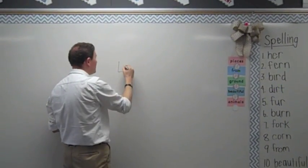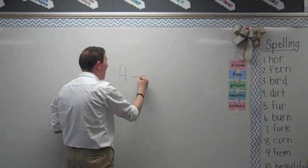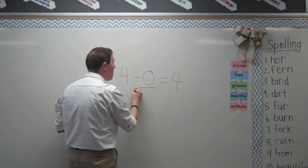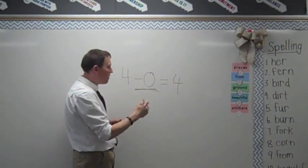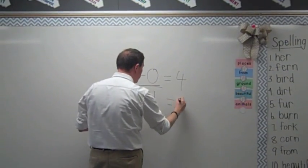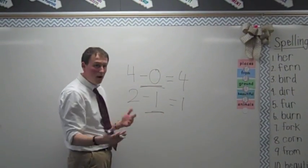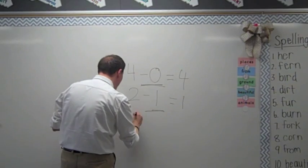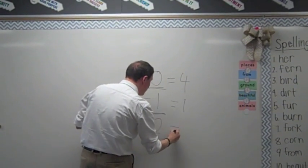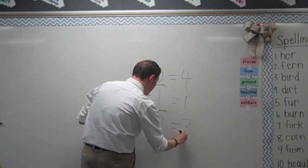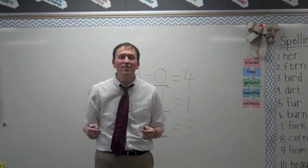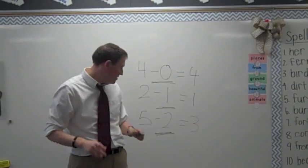For example, I might say 4 minus 0 equals 4. We're focusing on the minus 0 part. 2 minus 1 equals 1 — the minus 1 is the important part. And for example, 5 minus 2 equals 3, with the minus 2 being the important part. So as soon as Mrs. Anderson gets back, we'll go ahead and get started with our lesson.